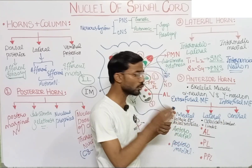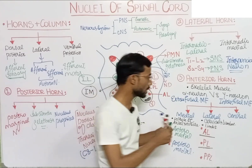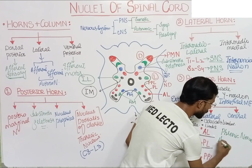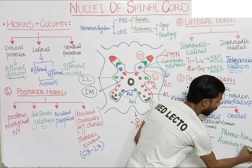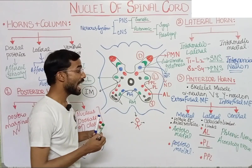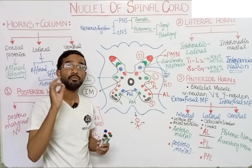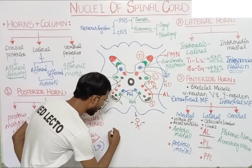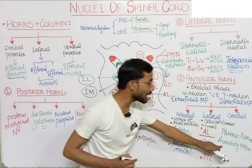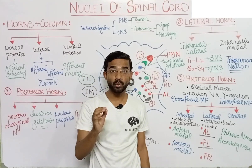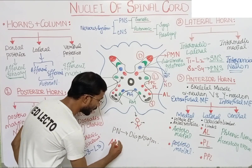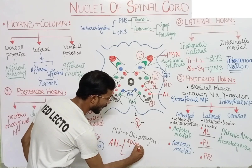The last group in the anterior horn is the central nucleus. Here you will see two important nuclei: the phrenic nerve nucleus and the accessory nerve nucleus. The phrenic nerve supplies the diaphragm. The accessory nerve has two roots: the spinal root and the cranial root. It is derived from the nucleus of the accessory nerve.